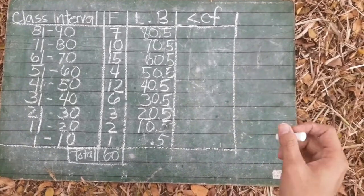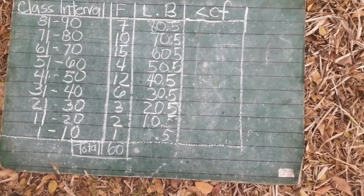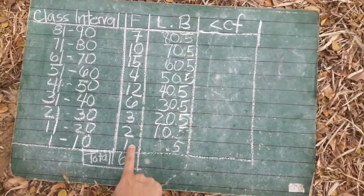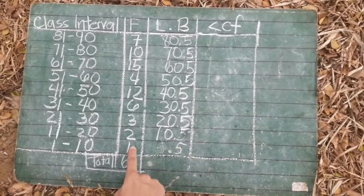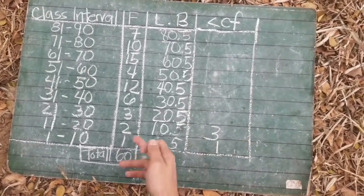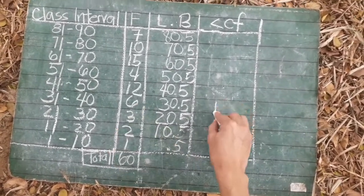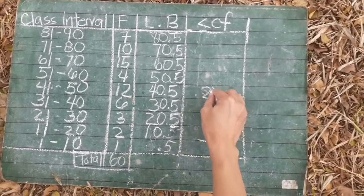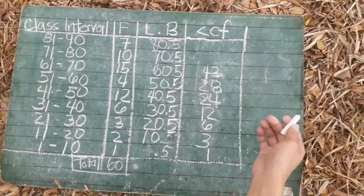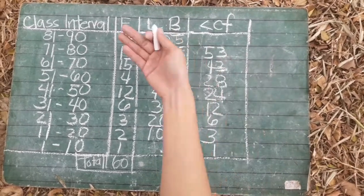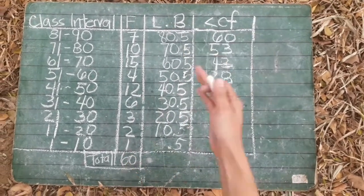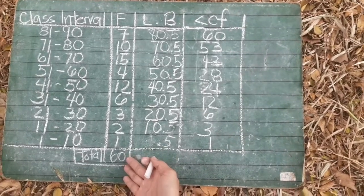And now we're going to the next part on how to get the cumulative frequency. All you have to do is add the frequency from lower to upper. First, 1 — we have nothing to add, so we put 1. Then 1 plus 2 equals 3, 3 plus 3 equals 6, 6 plus 6 equals 12, 12 plus 12 equals 24, 24 plus 4 equals 28, 28 plus 15 is 43, 43 plus 10 equals 53, and 53 plus 7 equals 60. As you can see, the last cumulative frequency is 60 and the total of the frequency is 60 — they are the same. If they match, it means you're right.